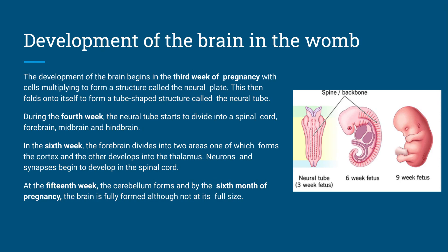By the 15th week, our cerebellum forms, and by the sixth month of pregnancy the brain is fully formed, although it's obviously not at its full size. So by the time you're born, the brain's about 25% that of an adult brain at birth. So that's just a quick run through of what happens in the womb regarding the brain.